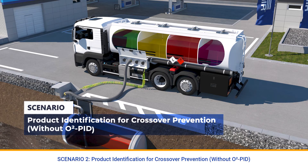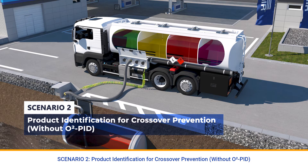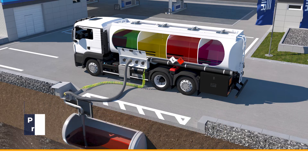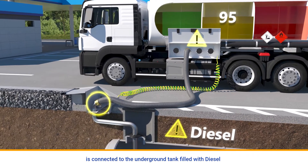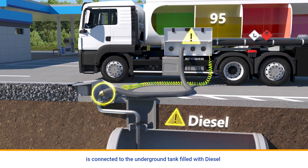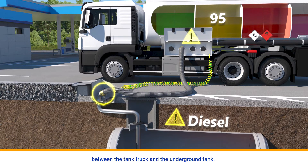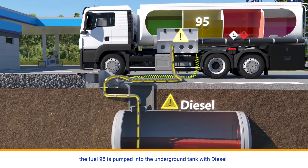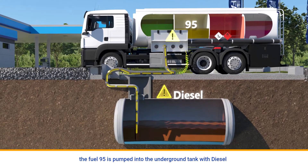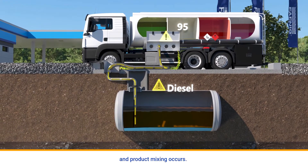Scenario 2: Product identification for crossover prevention without O2PID. The compartment in the tank truck with fuel 95 is connected to the underground tank filled with diesel through the filling hose, and a proper hose connection is established. Without the O2PID, when the fuel is delivered from the tank truck, the fuel 95 is pumped into the underground tank with diesel and product mixing occurs.